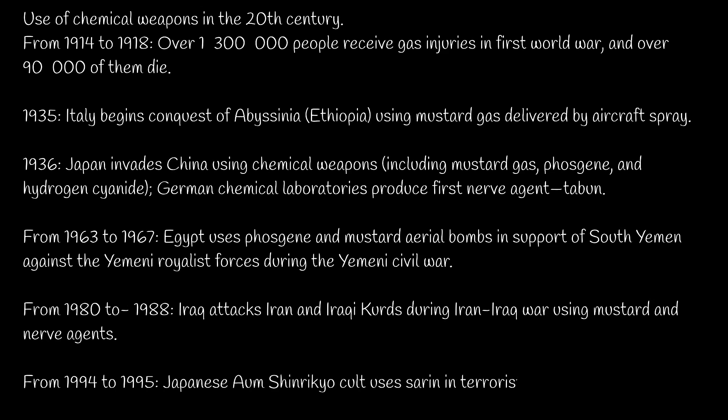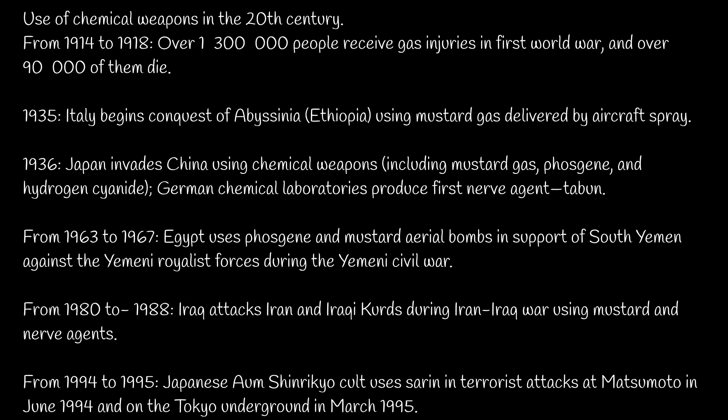From 1980 to 1988, Iraq attacked Iran and Iraqi Kurds during the Iran-Iraq war using mustard and nerve agents. From 1994 to 1995, the Japanese Aum Shinrikyo cult used sarin in terrorist attacks at Matsumoto in June 1994, and on the Tokyo underground in March 1995.